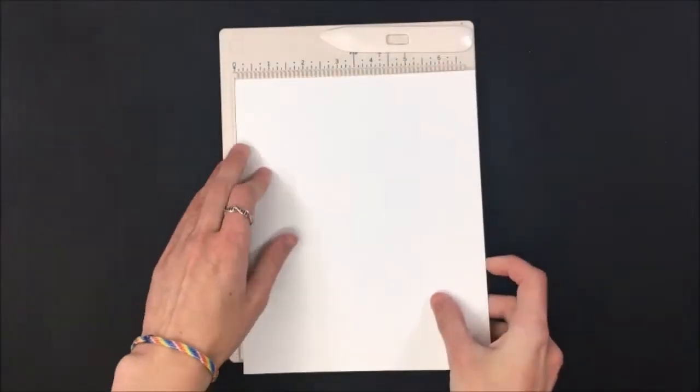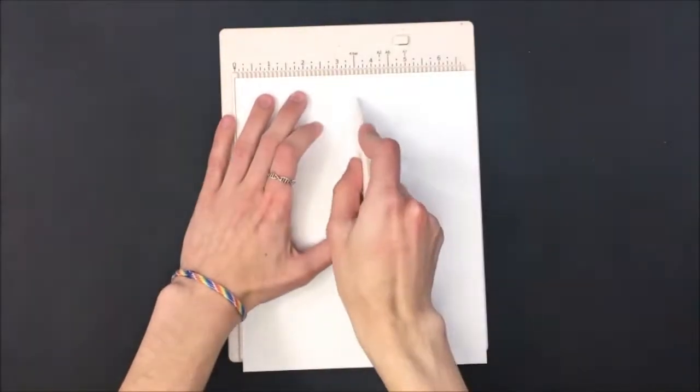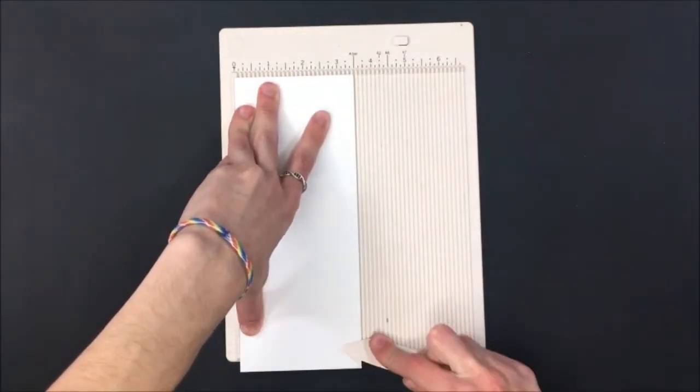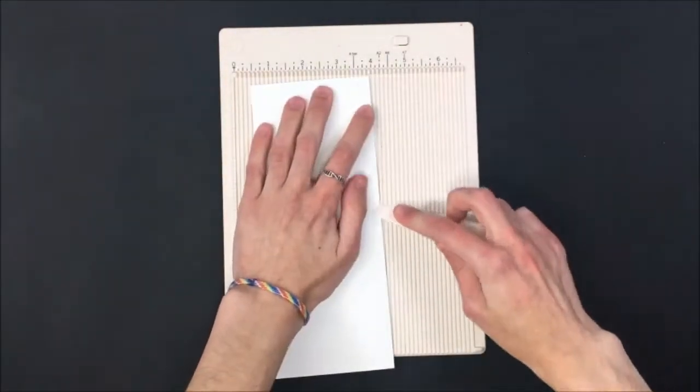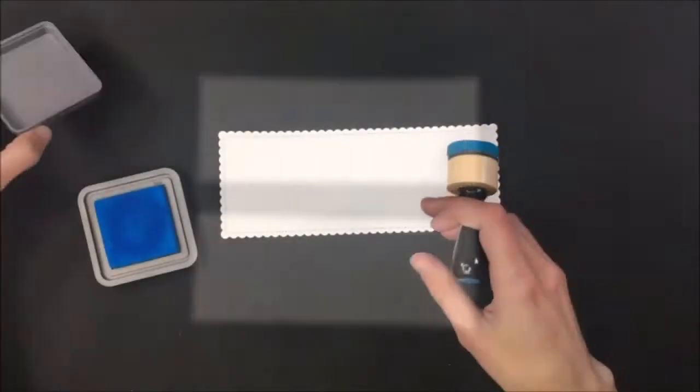I'm starting off with a piece of eight and a half by 11 inch cardstock and I'm just cutting it down to seven inches and then I'm going to score at three and a half inches. This is going to give me a slimline card that ends up being eight and a half by three and a half.